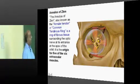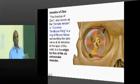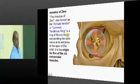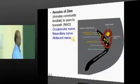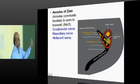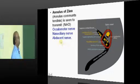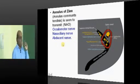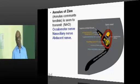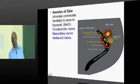You have one central tendinous ring of fibrous tissue from where the extraocular muscles take origin, which is called annulus of Zinn. Through the annulus of Zinn, what structures pass through that circle? Three structures: abducens nerve, oculomotor nerve and nasociliary nerve typically pass through the annulus of Zinn.